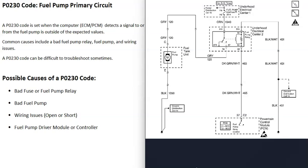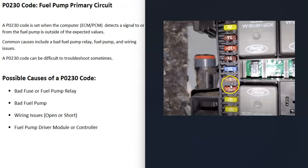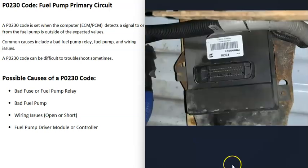One thing to mention: some vehicles — like Fords and similar — have what's called a fuel pump inertia switch. This switch is hidden somewhere in the vehicle, and if there's an accident, it's supposed to detect the impact and automatically shut off the fuel pump. Sometimes these get triggered for other reasons and need to be reset. So if you're not getting voltage back to the fuel pump and your fuses and relays are all good, check whether your vehicle has a fuel pump inertia switch and make sure it hasn't been triggered.